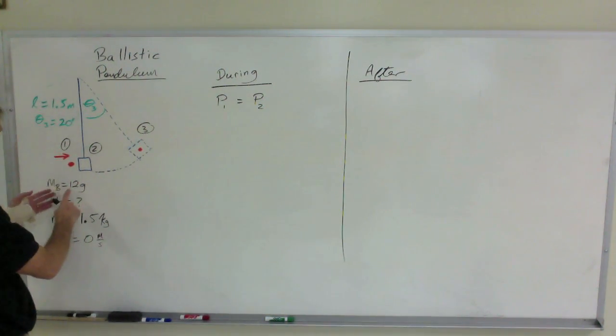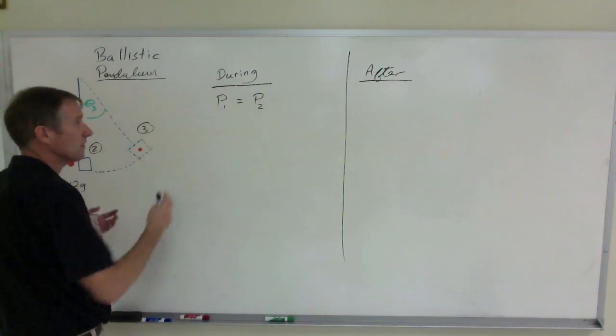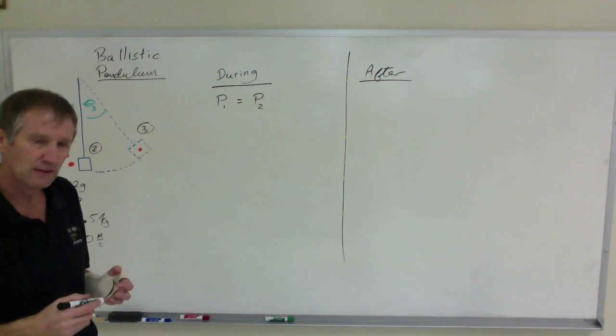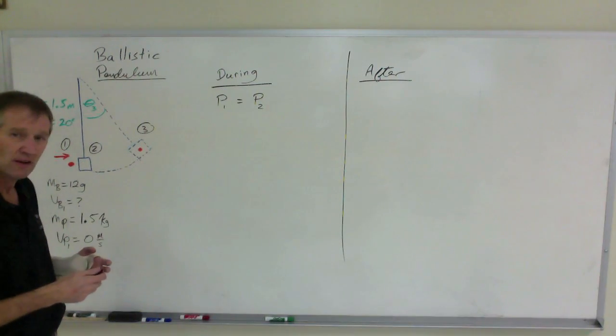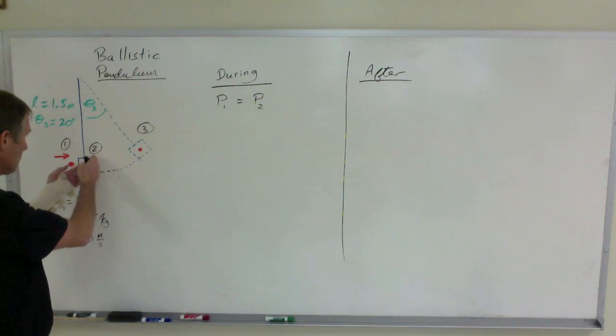I'm looking for the velocity of the bullet at point one. During the collision, this is a perfectly inelastic collision, perfectly inelastic because they stick together after the collision, which is right here at point two.